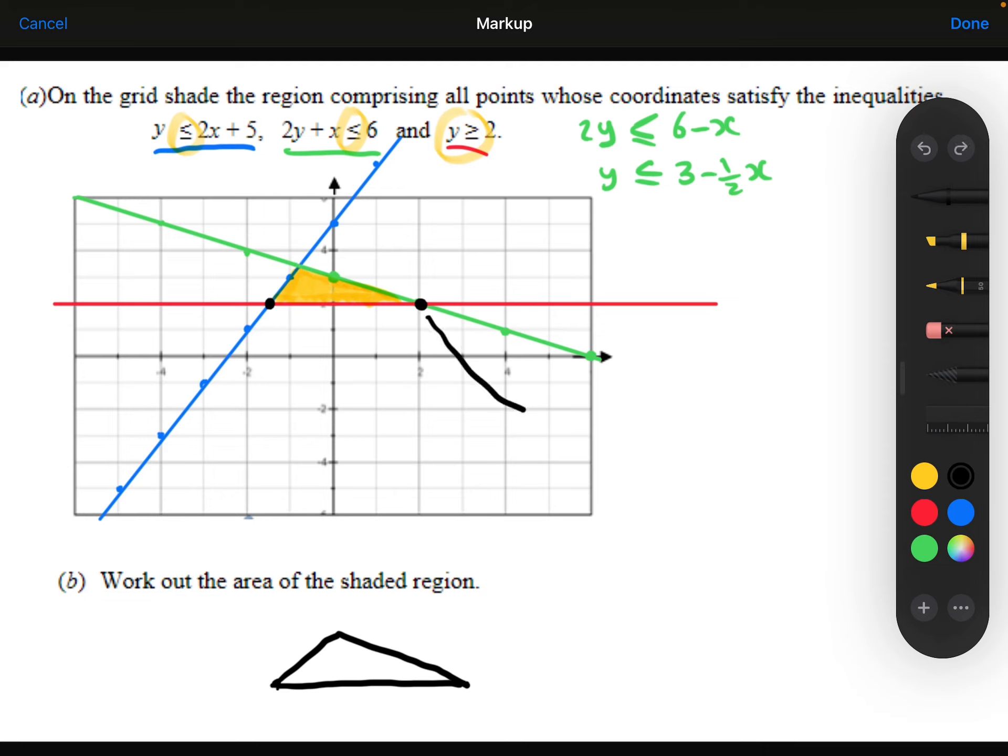So this one here, it looks like it's 2 from my sketch, but I'm just going to double check that. That's where the green line and the red line intersect. So if I substitute the 2 into the first equation here, I get 2 times 2 is 4, 4 plus x is 6. So yes, that coordinate is the coordinate (2, 2).